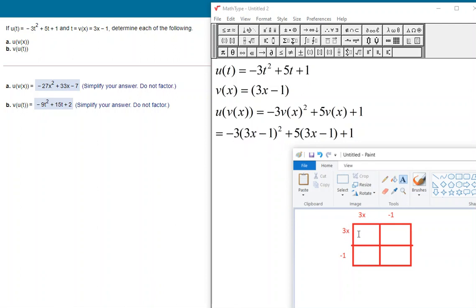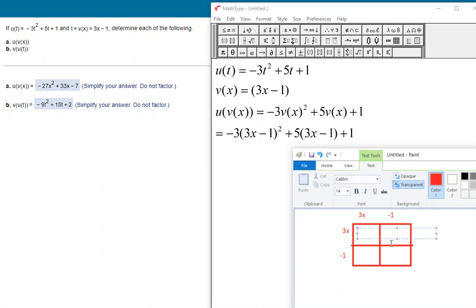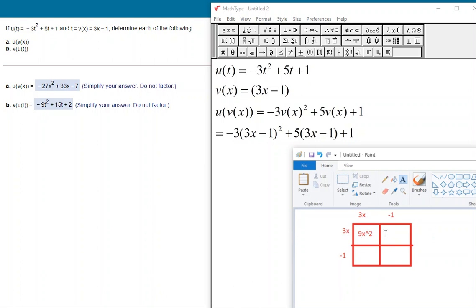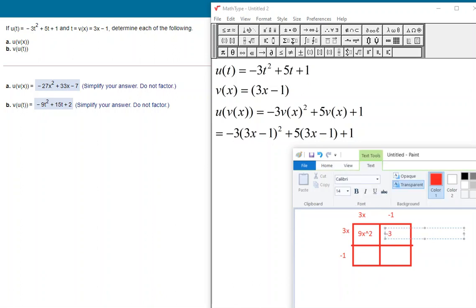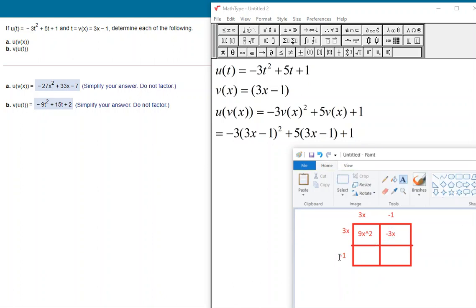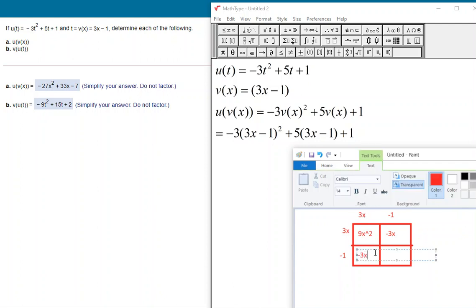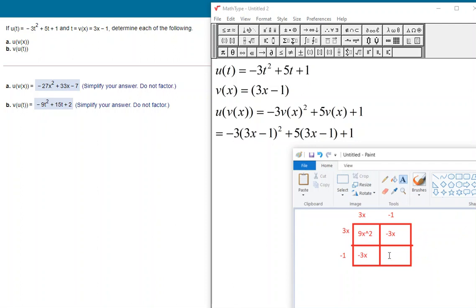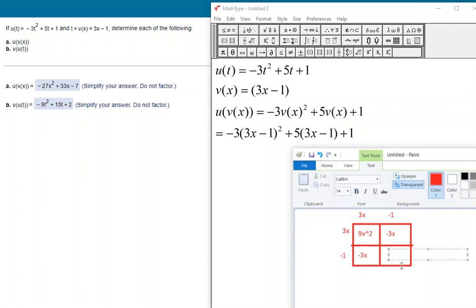So if we complete our box here, 3x times 3x, that's going to be 3 times 3 is 9, x times x is x squared. Then 3x times negative 1 is negative 3x. And then 1 times 3x is another negative 3x. And then negative 1 times negative 1 is a positive 1.